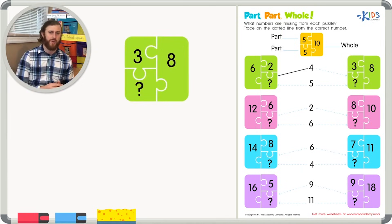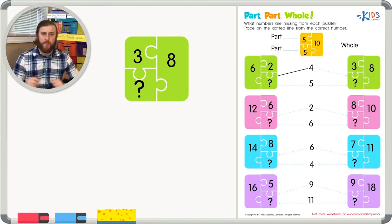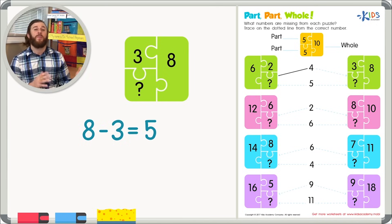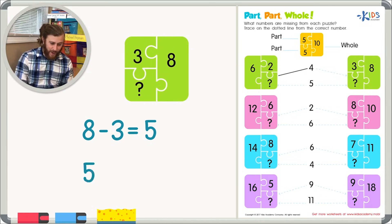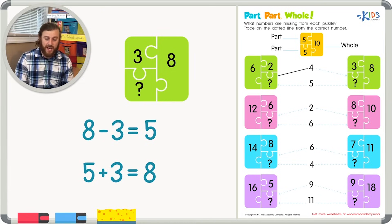Now let's look at the other side. We have an eight and a three, and eight is the whole number. Let's use subtraction: eight minus three equals five. So I think the other part is five. Let's add our two parts together to be sure: five plus three equals eight — five, six, seven, eight. So we can trace on the dotted line to the five.